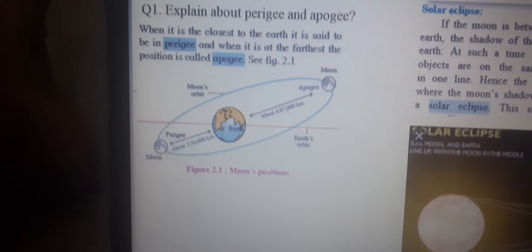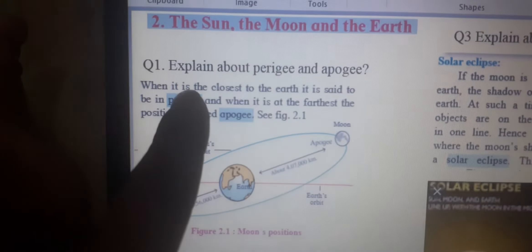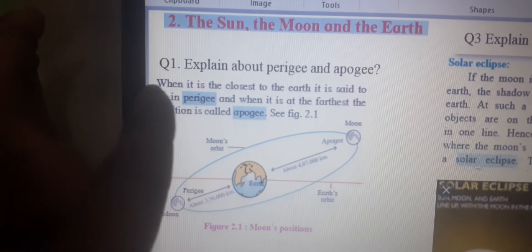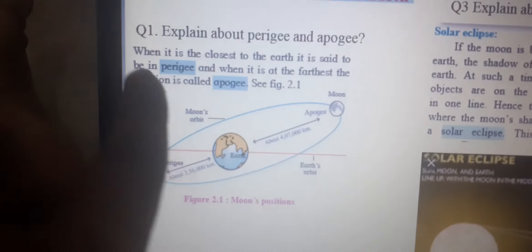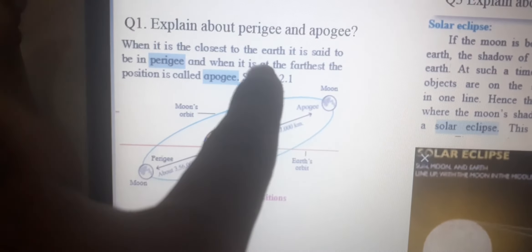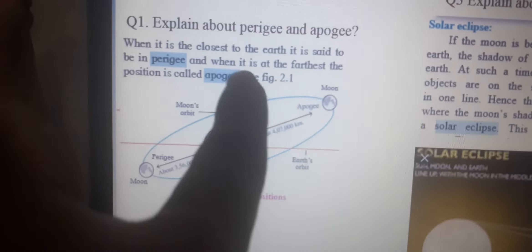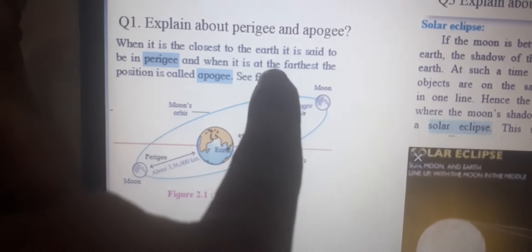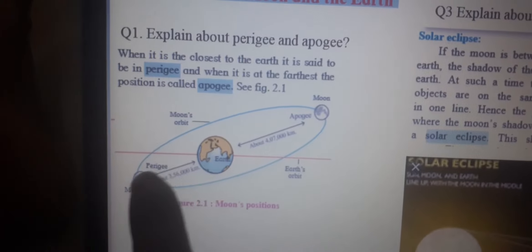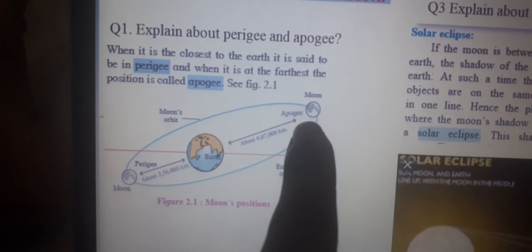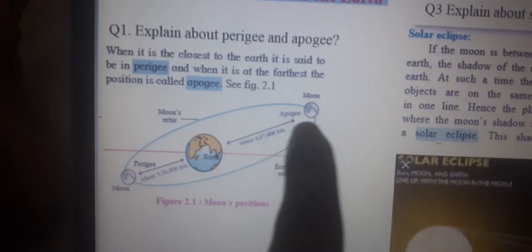You will understand this answer. When the Moon is closest to Earth — closest means Perigee — it is said to be Perigee. This position means Perigee. And when the Moon is at the farthest — farthest means far — it is called Apogee. This position means Apogee. If Moon is closest to Earth, it is called Perigee. If Moon is farthest from Earth, it is called Apogee. Is this clear?